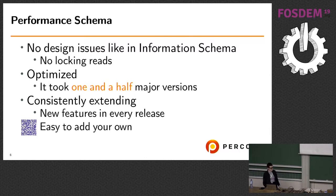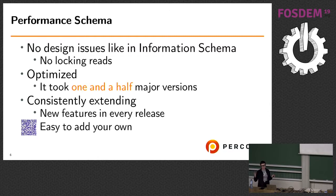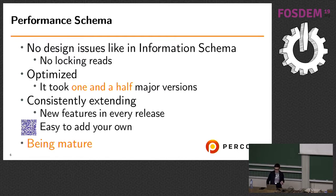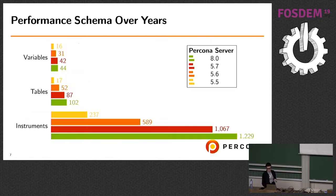Performance Schema is consistently extending — you can even add your own extensions to it. Just check the user manual for how to do that. To show how it has grown: it was first introduced in version 5.5 with only 237 instruments, and now it has more than 1,000.